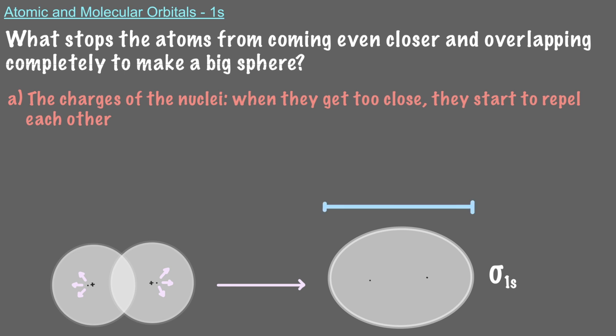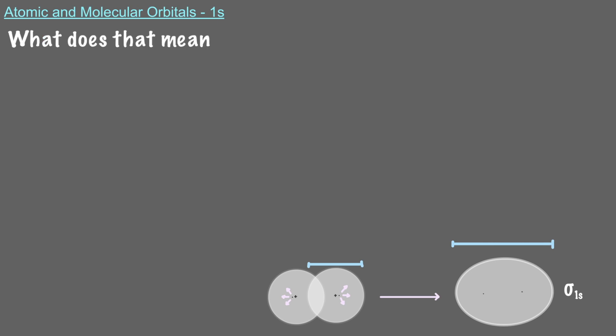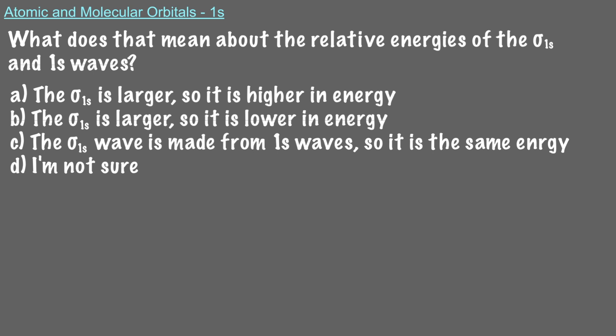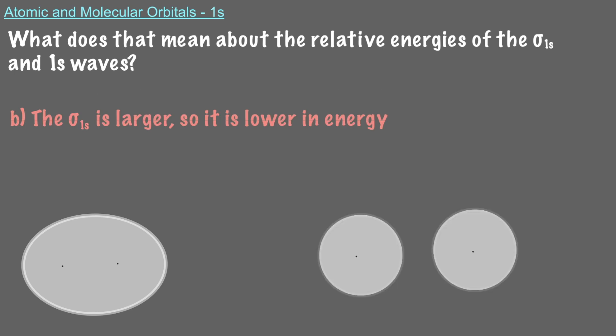Notice that the sigma wave is larger than the 1s waves that combine to make it. What does that mean about the relative energies of the sigma 1s and 1s waves? Larger wavelength means lower in energy, so this larger sigma 1s wave is lower in energy than the smaller 1s waves from which it's made.